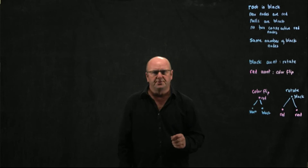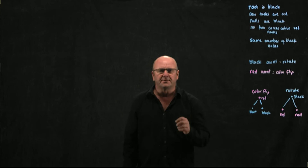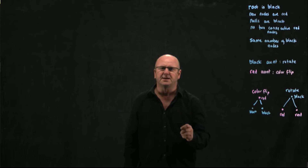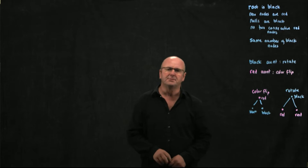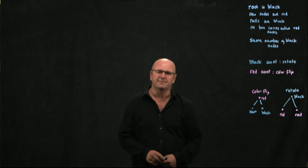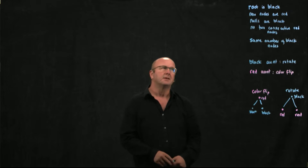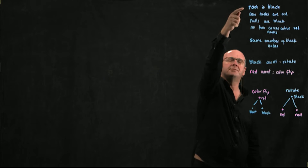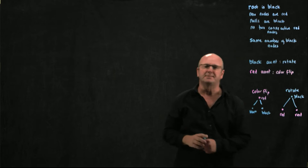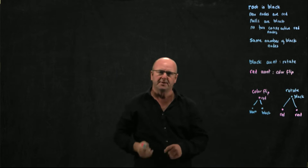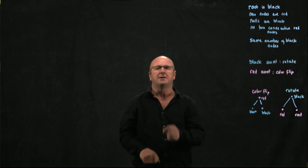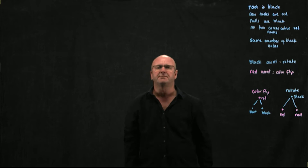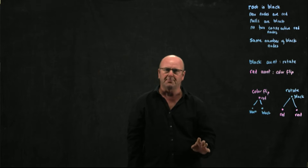Before we get into looking at color flips and rotations in our red-black tree, I want to remind you of the rules. The first one is that the root is always black. Whenever we do a manipulation, when we're done, we're just going to change the root and make it black.